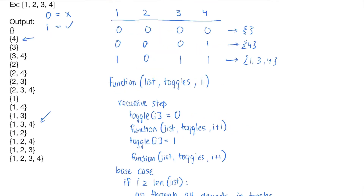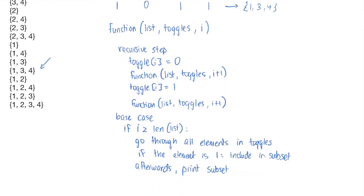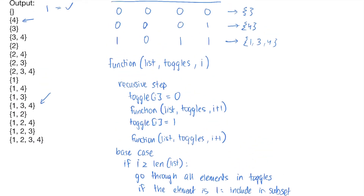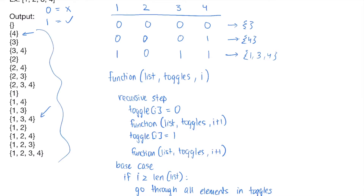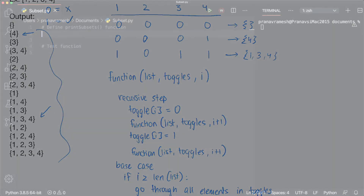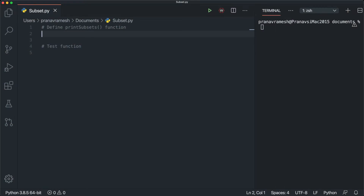To summarize: we create a recursive function where at each recursive step we toggle an element to either use it or not use it, and once we reach the end of the list we print all the used elements as a subset, ignoring the rest. This will eventually print every possible subset. Let's go ahead and implement this in Python — the code will consist of a 'print_subsets' function and a test on the list from earlier.